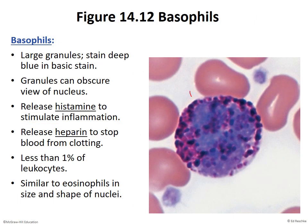Basophil — its granules are the star of the show, and they are very blue/purple. They are the least common of all white blood cells. The word 'basal' means bottom — that's why the stratum basale in the epidermis was the bottom layer. The granules contain two types of chemicals: histamine and heparin.